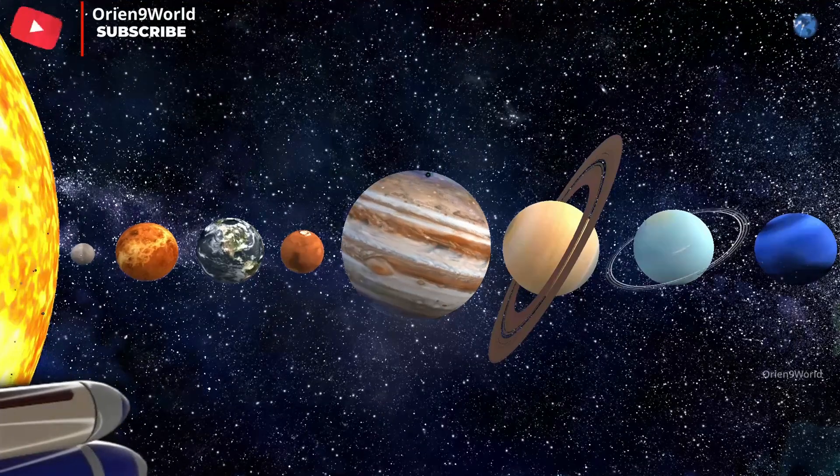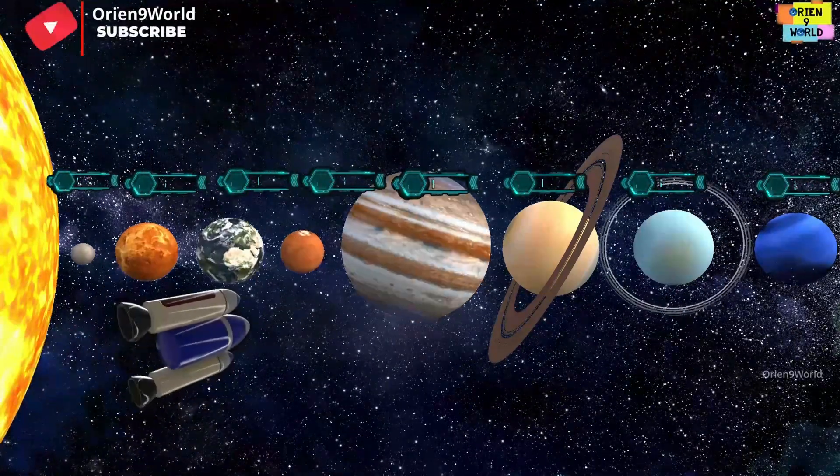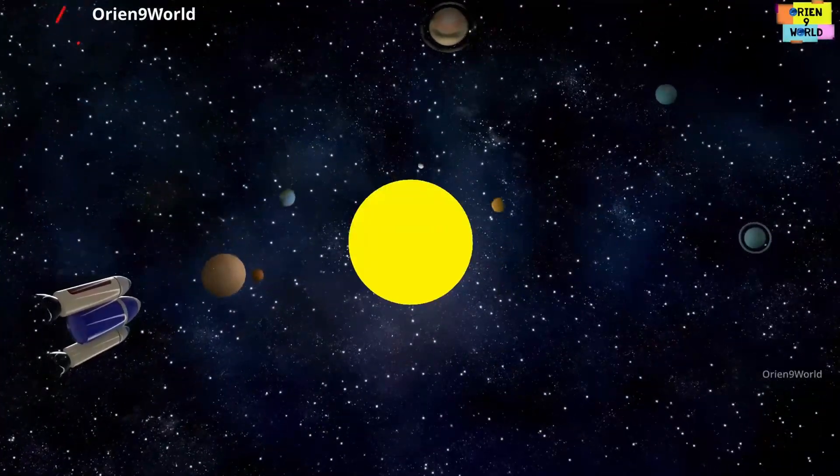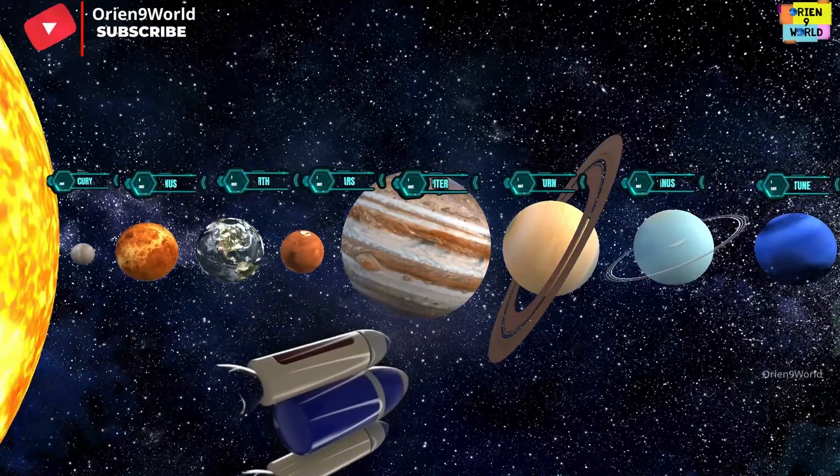There are eight planets in the solar system, we revolve around the sun. Join us to learn about the different planets, now sing along and have some fun.